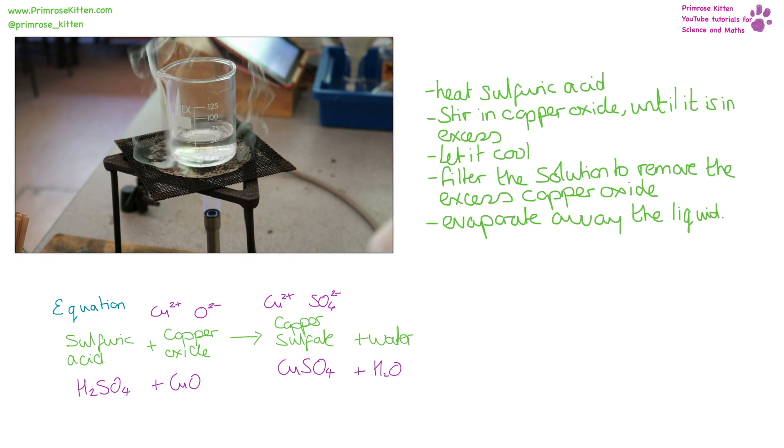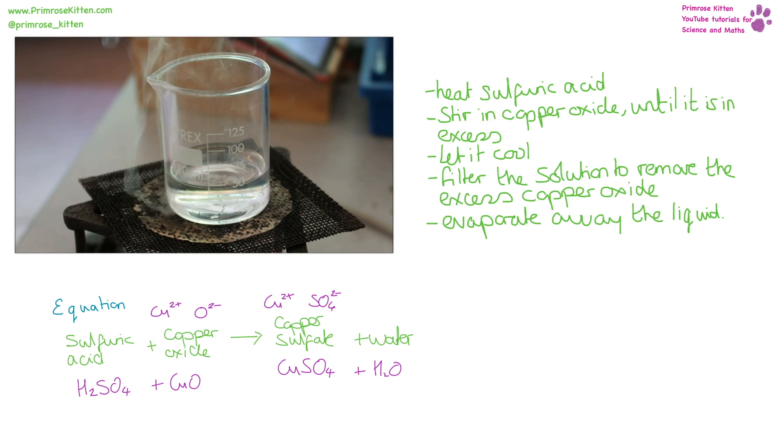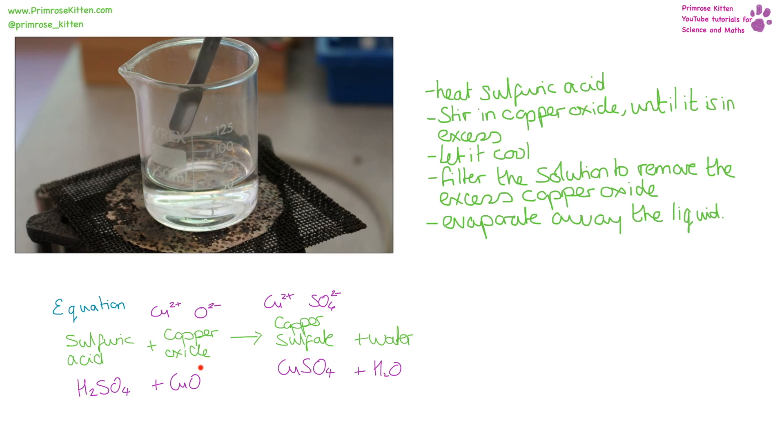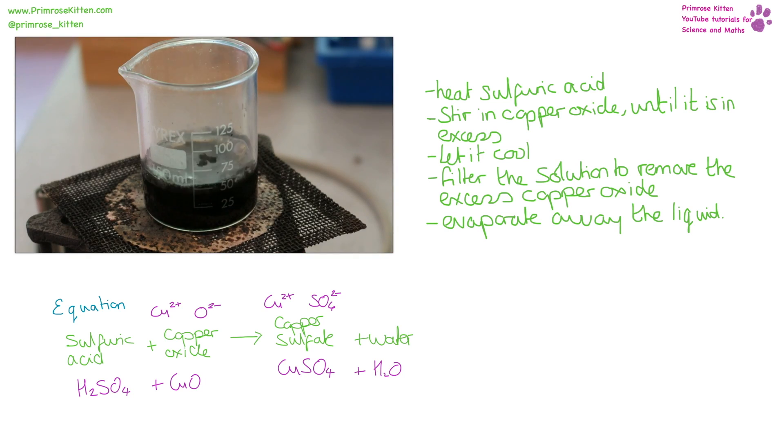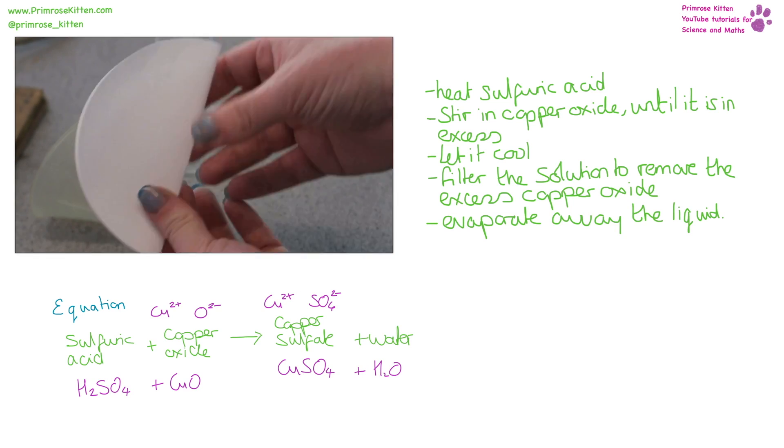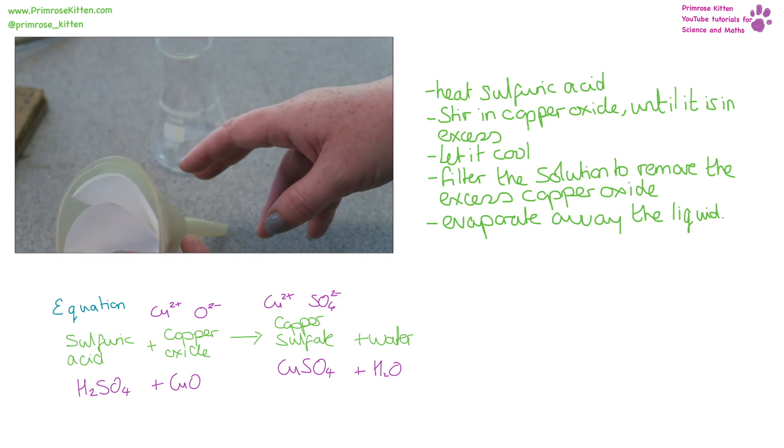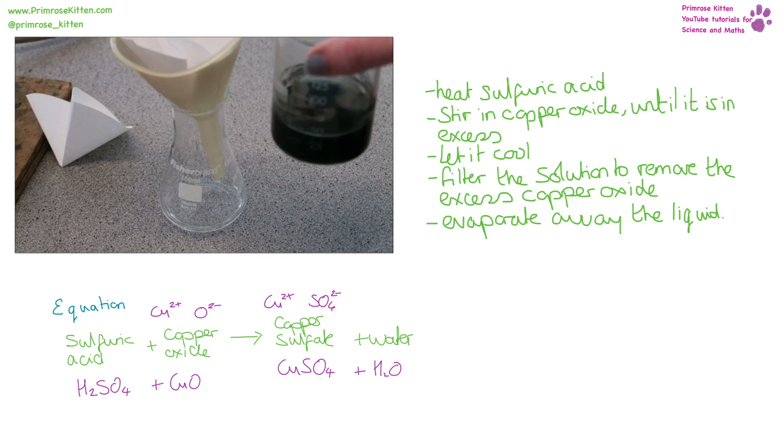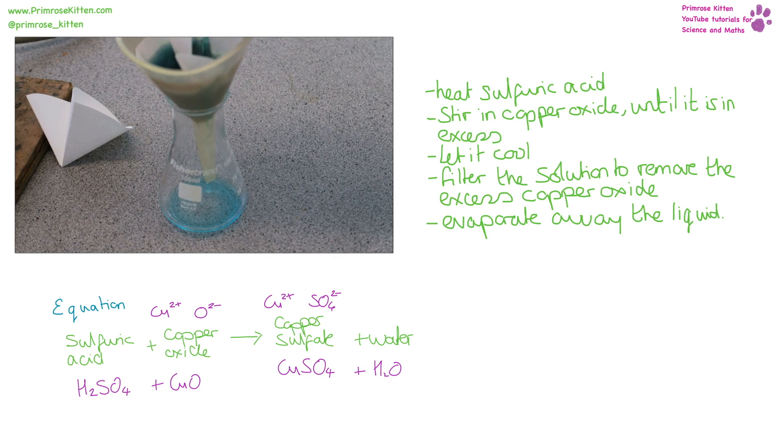For making a pure salt, we are going to be making copper sulfate. This is mixing sulfuric acid and copper oxide to make copper sulfate and water. You're going to need to heat the sulfuric acid, stir in the copper oxide, which is a black powder, until it is in excess, which basically means you can't dissolve it anymore. Let it cool a bit, and then you can filter the solution to remove the excess copper oxide, so that the black copper oxide powder will stay in the filter paper, and then the solution of copper sulfate will come out down the bottom.